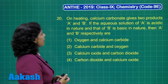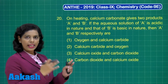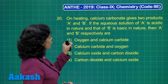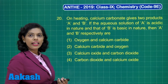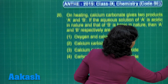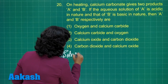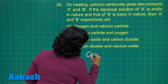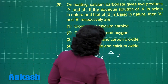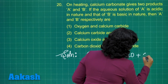Question number 20. On heating calcium carbonate gives two products A and B. If the aqueous solution of A is acidic in nature and that of B is basic in nature, then A and B respectively are. You need to take calcium carbonate, heat it, and on heating you get calcium oxide and carbon dioxide.